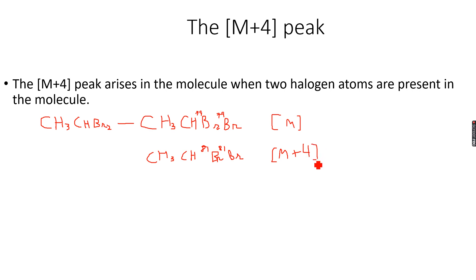Then I have CH₃CH with Br-79 and Br-81. The first isotope is the lighter isotope, second one the heavier. Then I can also have...